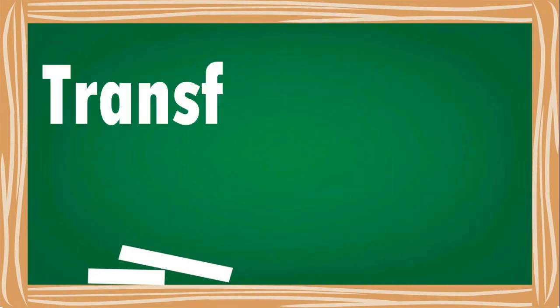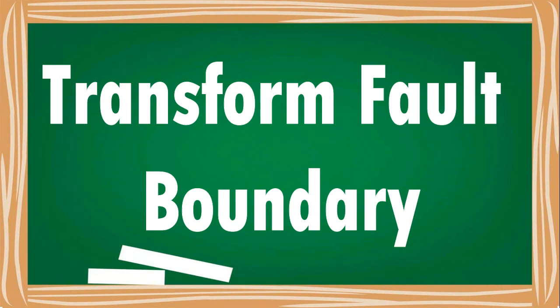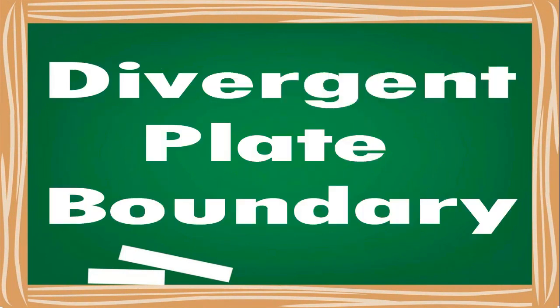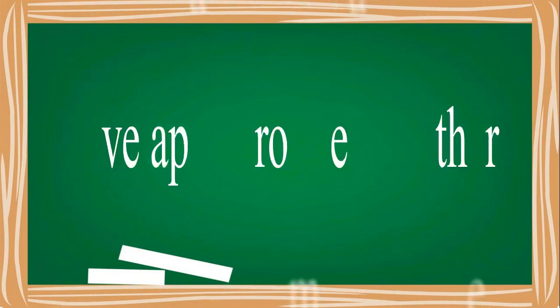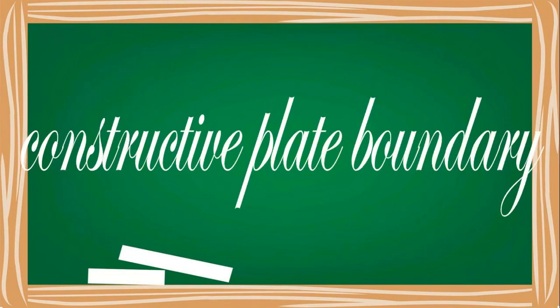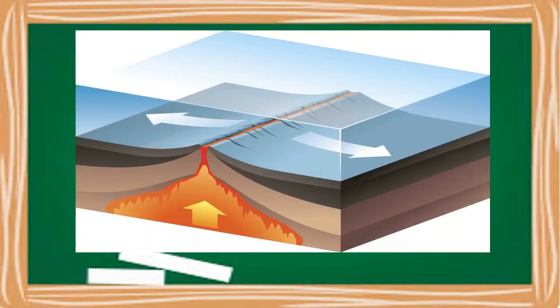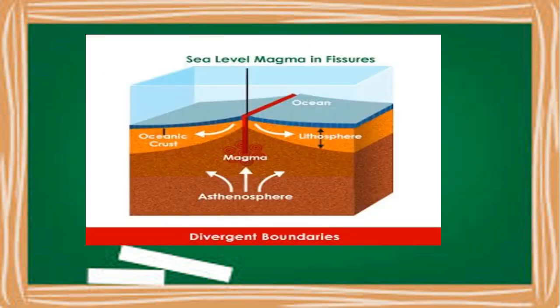The three types of plate boundaries are differentiated by the type of movement they exhibit, namely: divergent plate boundary, convergent plate boundary, and transform fault boundary. The first type is the divergent boundary, wherein plates move apart creating a tension zone. Divergent plate boundary is also known as a constructive form of plate boundary. Along these boundaries, earthquakes are common and magma rises from the earth's mantle to the surface.